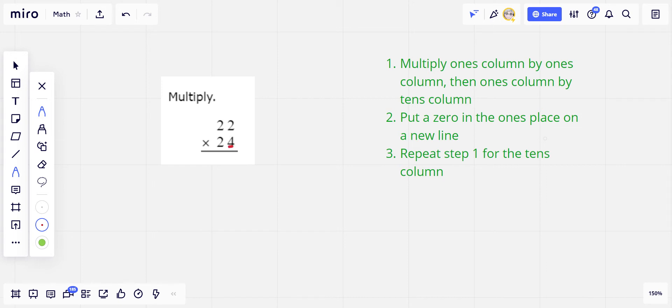Let's start with our ones column here, so it's going to be four times two first, so four times two, that's eight, so that eight goes right down here, and then four times two again in the tens column also equals eight, so that goes right there.